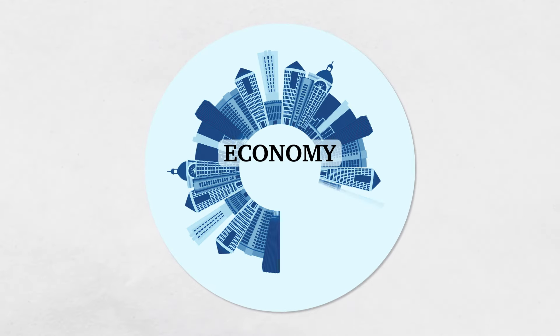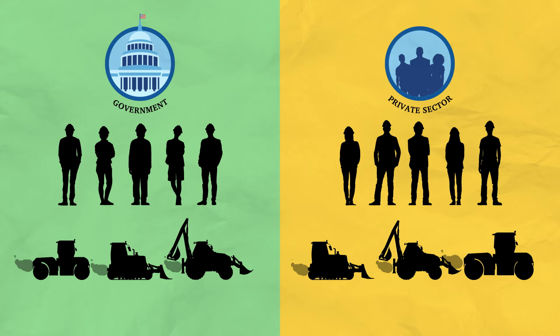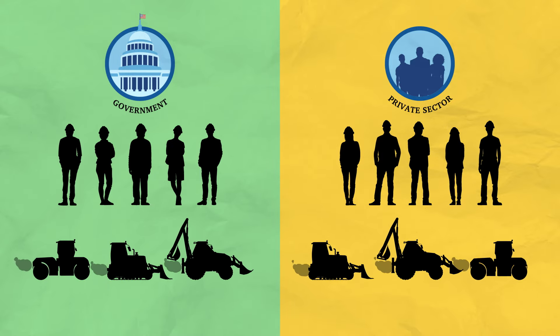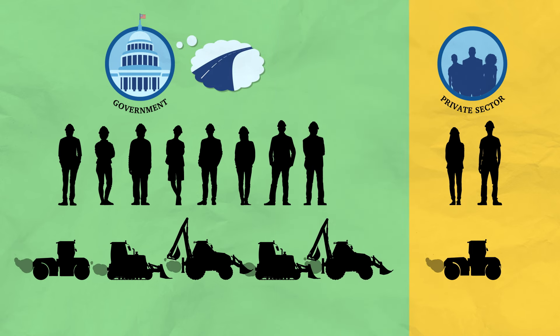Imagine an economy that's operating at full employment. Workers have jobs and factories are operating near capacity. If the federal government tries to increase spending to build a new road, then it necessarily has to take away some people and some capital from other sectors of the economy. GDP wouldn't increase because there's already full employment.